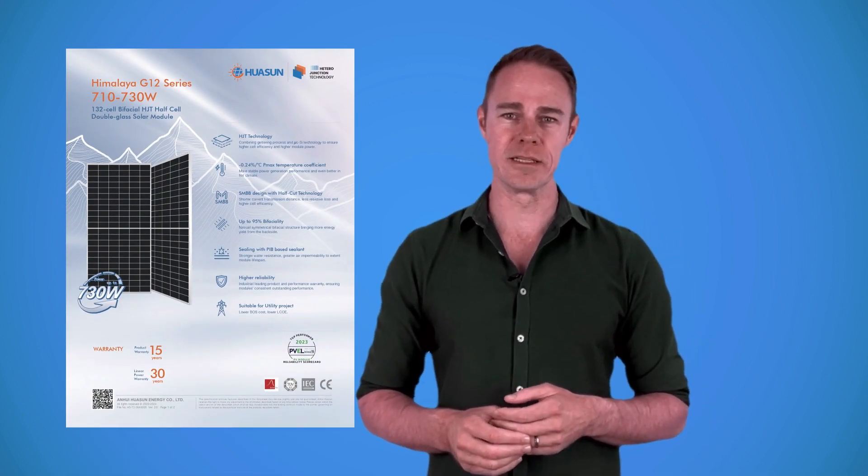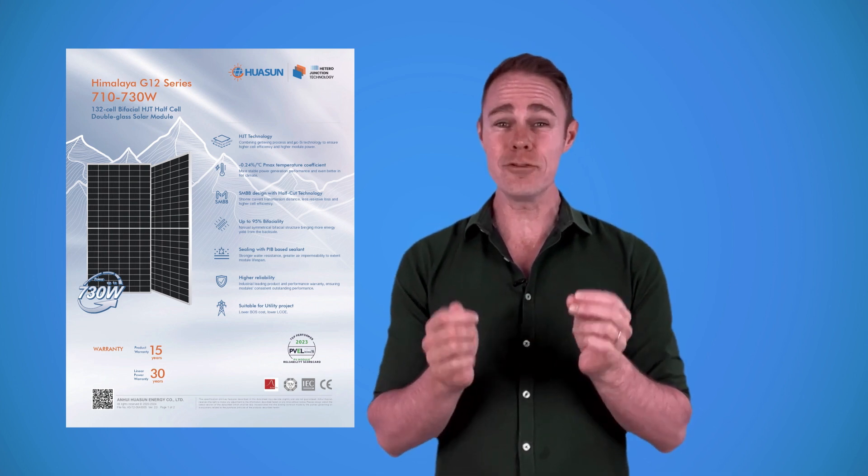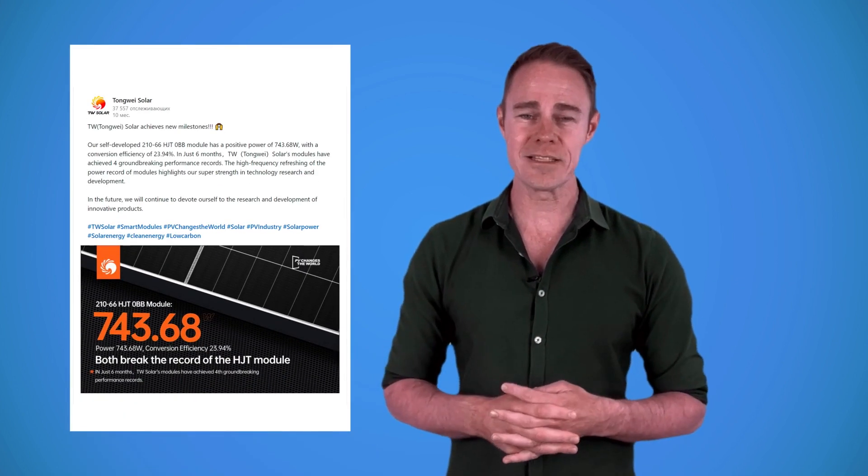Well, they're all bifacial. For starters, there's the Himalaya G12 from Huasun. It's rated for 730 watts, and with the rear side you could get over 800 watts from it. Tongwei Solar announced a 743-watt bifacial panel last year, but I don't think it's available just yet.